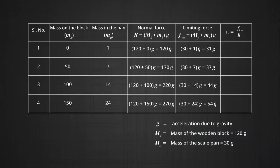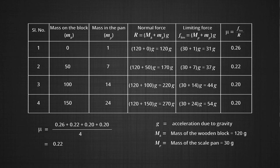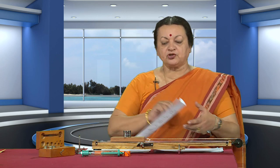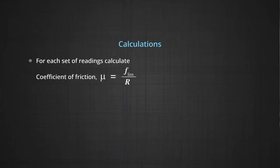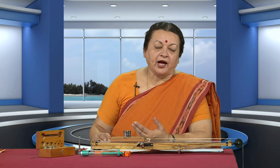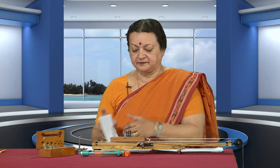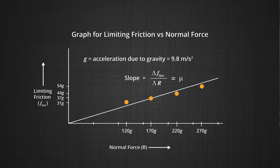With these readings, fill in the last column for the coefficient of friction by dividing the force of friction by the normal force. In each case, the value comes out to be approximately 0.2. Find the mean value of mu from all readings. Note that mu has no unit, since you are taking the ratio of two forces both measured in Newtons. You can also plot a graph of limiting friction F versus normal force, where the slope gives the value of mu.